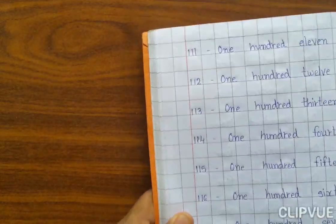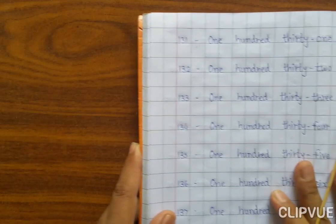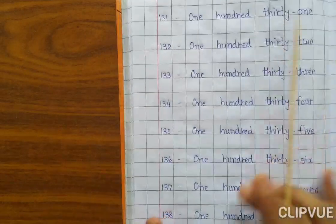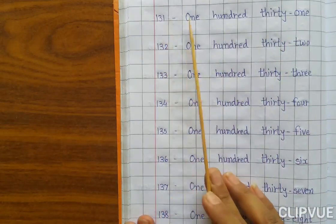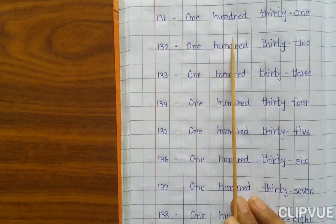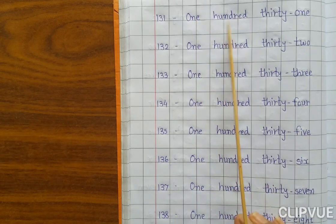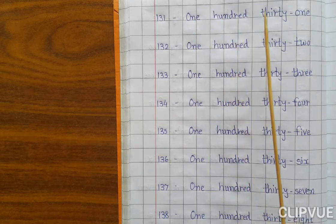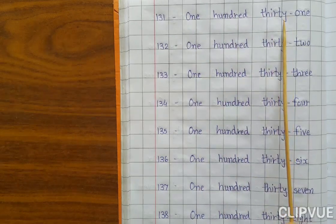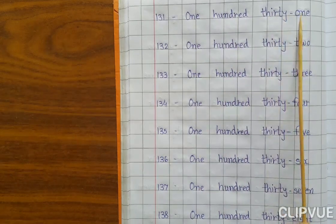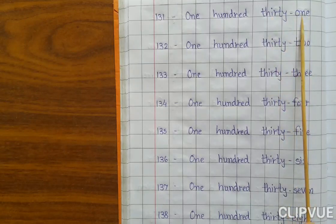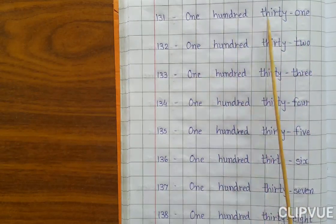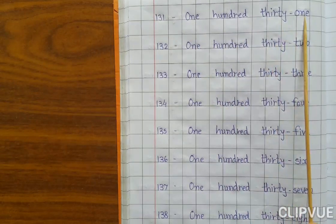Now go ahead to 130 and after. 131 — O-N-E 1, H-U-N-D-R-E-D 100, T-H-I-R-T-Y-O-N-E 31. 131.